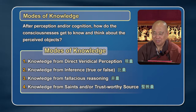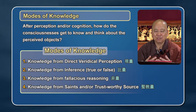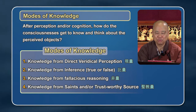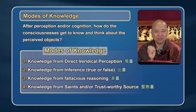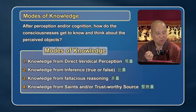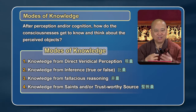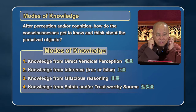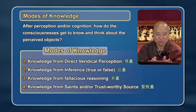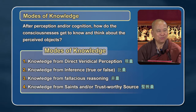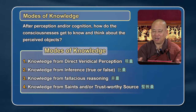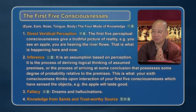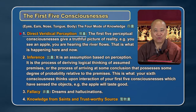If somebody says, 'I only believe in things I can scientifically prove,' that's not how human beings actually believe. Scientific proof is one way — you're believing in a trustworthy source. But when you believe in something, it's not necessarily because you've seen it with your eyes, heard it with your ears, tasted it with your tongue, or touched it with your body. How do you get to know something? You need to understand this in order to logically evaluate your thinking.